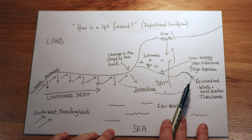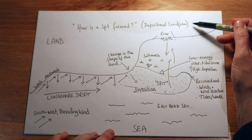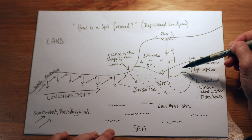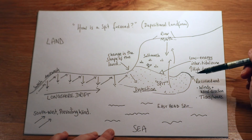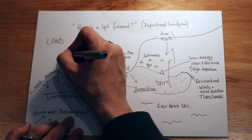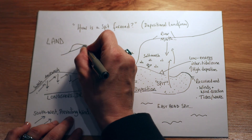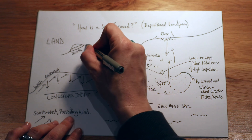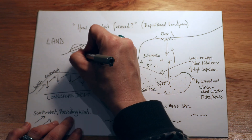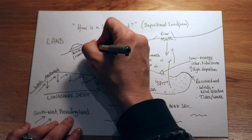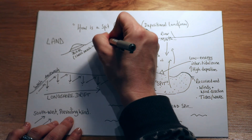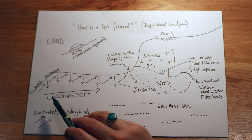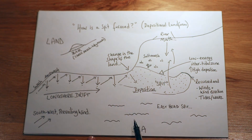A spit isn't so large that it will reach the other side of the bay — it's going to stick out and stop. But if it did continue and went all the way across, then that would be called a bar. Your example of a bar would be Chesil Beach over in Weymouth. The processes for this are exactly the same — we're still talking about longshore drift, swash and backwash, and deposition.